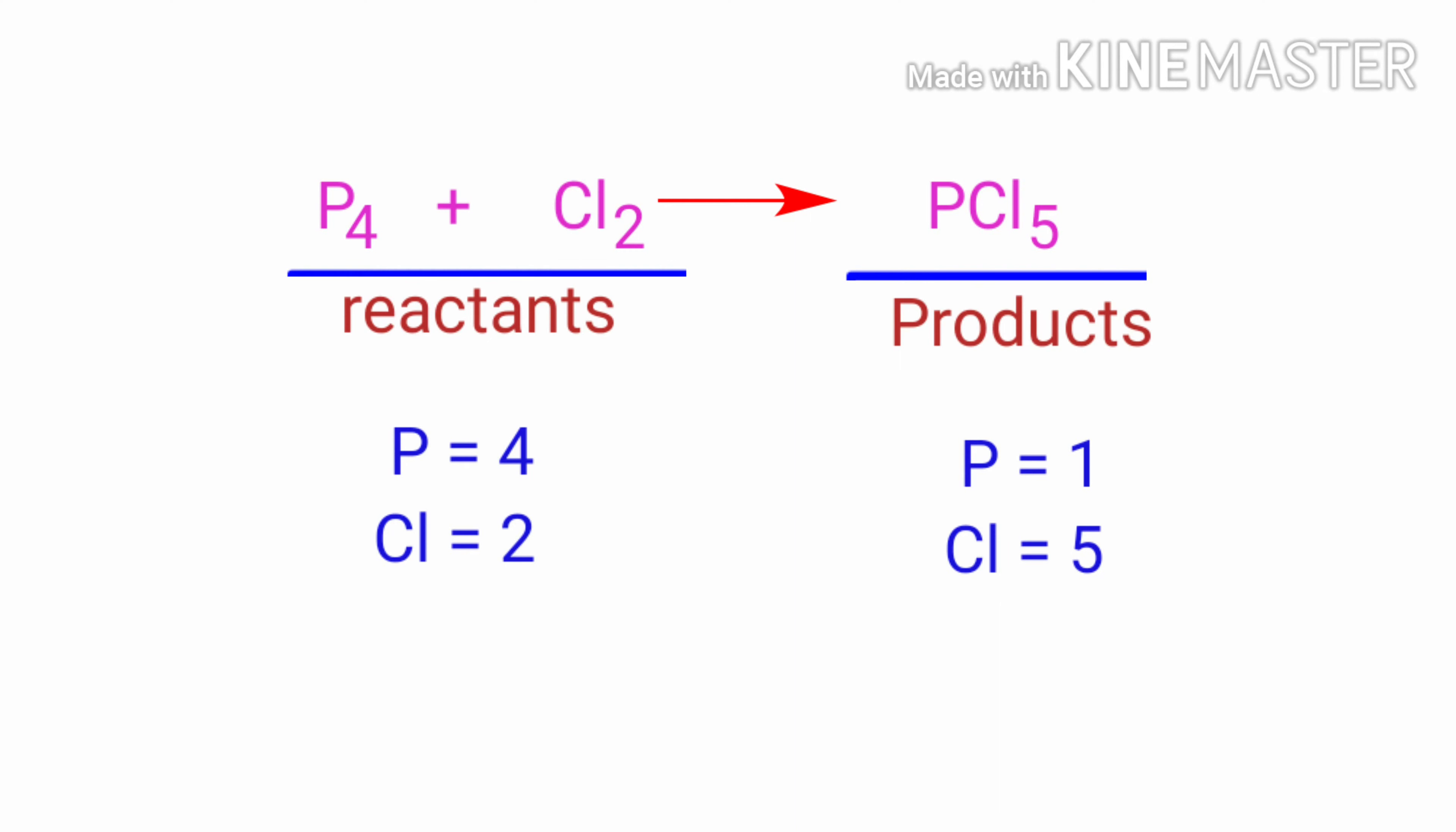To balance the chemical equation, we need to make use of coefficients. A coefficient is a number that we place in front of a chemical formula.